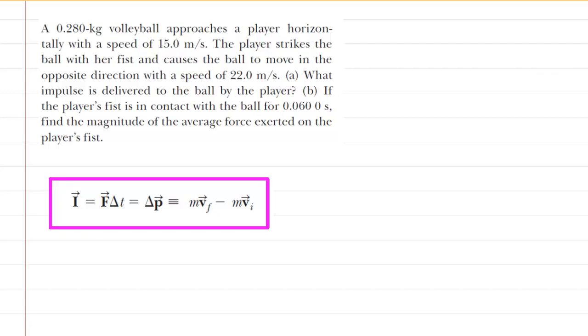In part A, we are asked to calculate the impulse delivered to the volleyball. To calculate that impulse, we can use this equation. We can see that the impulse equals many things, but the most important for part A is this quantity right here: m·vf - m·vi.